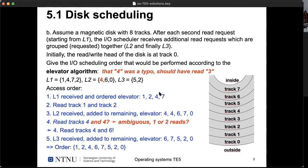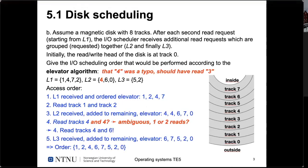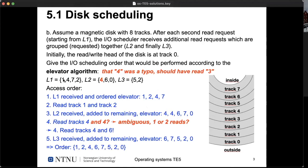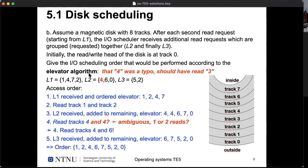Part B used the elevator algorithm with a slightly different set of requests. The elevator algorithm is named after how a real elevator works: rather than moving up and down for each individual request, it keeps moving in one direction. When moving upward and there are further requests above, it continues upward until no more requests remain above the current position, then reverses and moves downward.